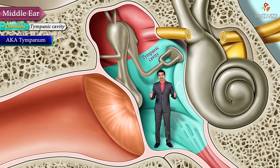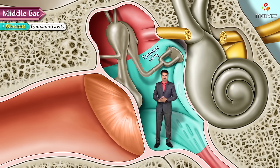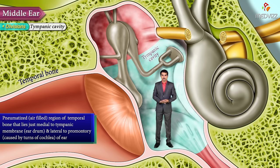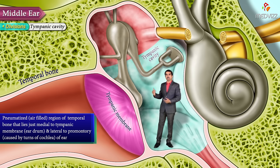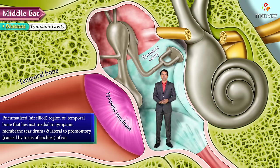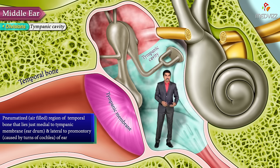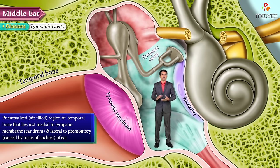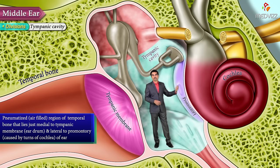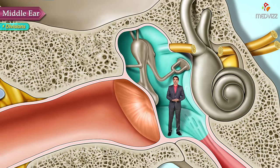The tympanic cavity, also called the tympanum, is a pneumatized region — that is, an air-filled region — of the temporal bone that lies just medial to the tympanic membrane, which is also called the eardrum. The middle ear is located lateral to the promontory, which is caused by the turns of the cochlea of the inner ear.